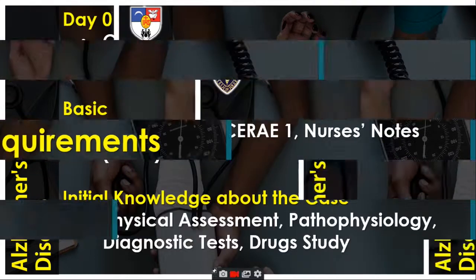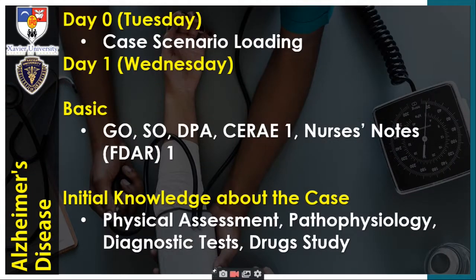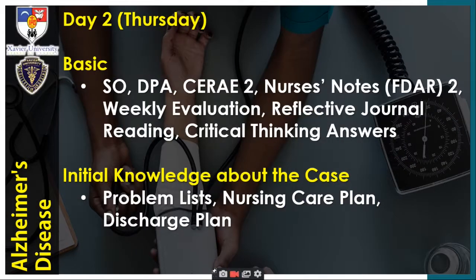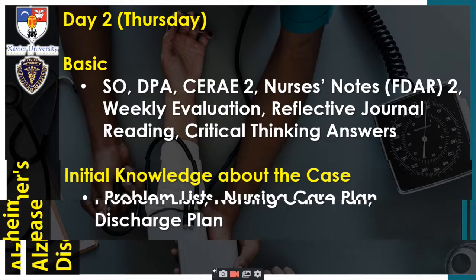For daily requirements — Day zero, Tuesday: case scenario loading. Wednesday (Day 1): basic GO, SO, DPA, Serie 1, Nurses Notes 1 for FDAR number one. Initial knowledge about the case includes physical assessment, pathophysiology, diagnostic test, and drug study. Day two, Thursday: basic SO, DPA, Serie 2, Nurses Notes 2 or FDAR 2, weekly evaluation, reflective journal reading, critical thinking answers, initial knowledge about the case, problem list, nursing care plan, and discharge plan.